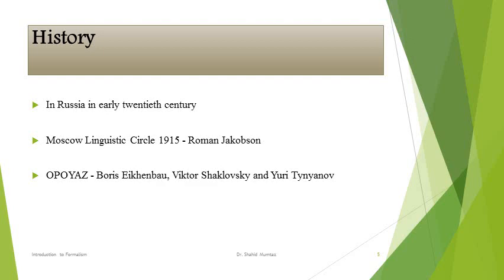The history of formalism: it started in Russia in the early 20th century. There were two groups. The first was the Moscow Linguistic Circle, established in 1915, whose main figure was Roman Jakobson — written with a J but pronounced 'Yakobson.' The second group was Oppoyas, whose main figures were Boris Eikhenbaum, Victor Shklovsky, and Yuri Tynyanov. The studies and debates of these two groups paved the way for formalism.